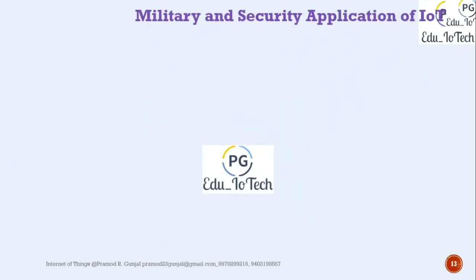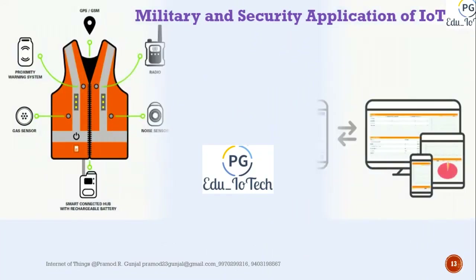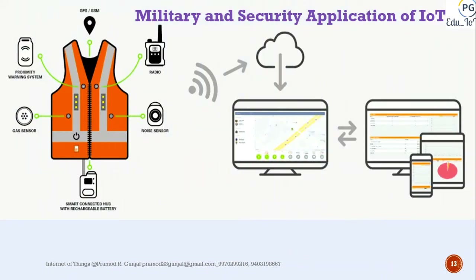Application of IoT for military and national security: national borders can be continuously monitored by installing sensors at remote locations. Smart wearable devices can be used for soldiers for their real-time health monitoring.